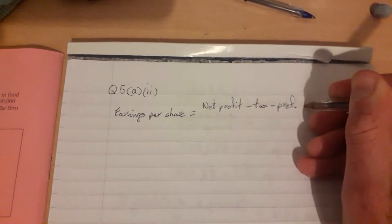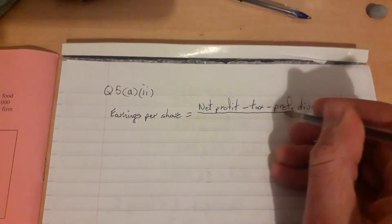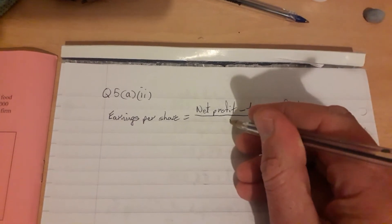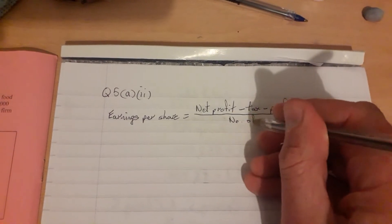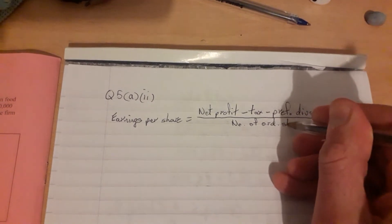I'll call it PREFDIVS for short, preference dividends, divided by the number of ordinary shares.